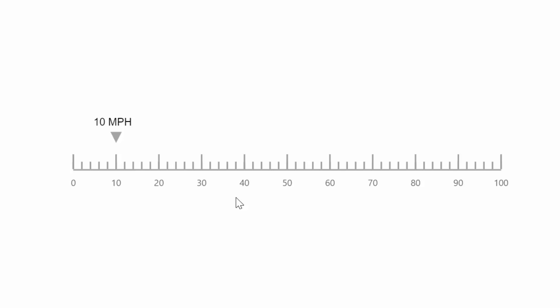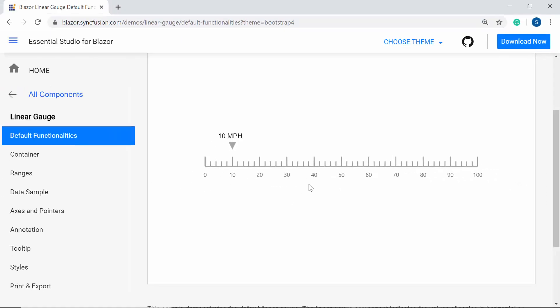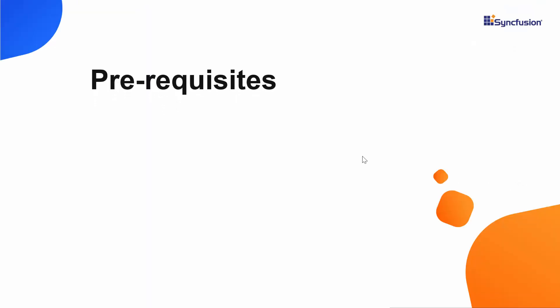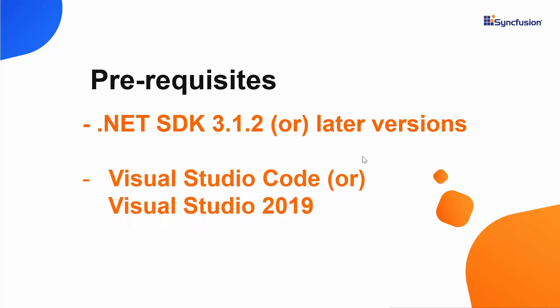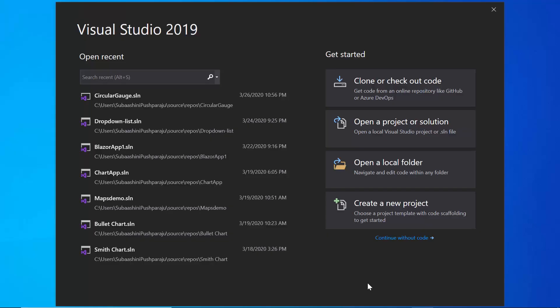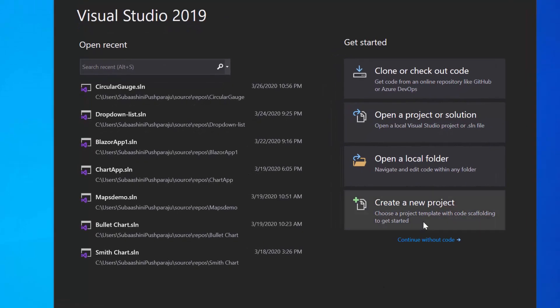So let me start with the Blazor application creation process. I need to make sure whether .NET Core SDK 3.1.2 or later versions are installed on my machine, and I should have Visual Studio Code or Visual Studio 2019 to create a Blazor application. In this tutorial, I'm going to create a new server-side Blazor app, so let me open Visual Studio 2019 first and create a new project from the dashboard.